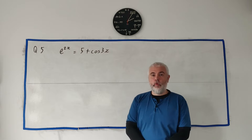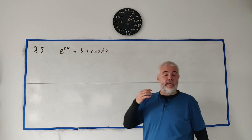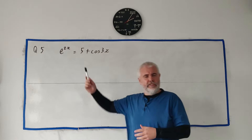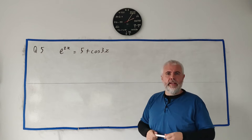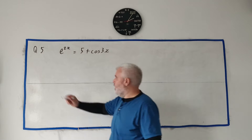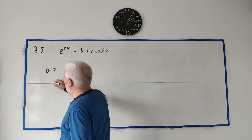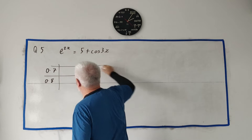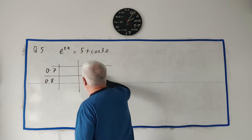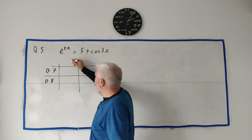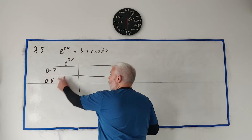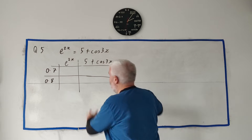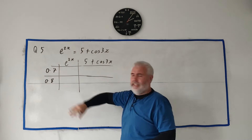Question 5 is going to be a question about using the iterative formula. But it begins by giving us this equation here and telling us it has only one root, and then asks us to show by calculation that it lies between 0.7 and 0.8. So I'll split this up into a few parts. I'm going to calculate e to the 2x at these two points, and then calculate 5 plus cosine 3x at these two points.